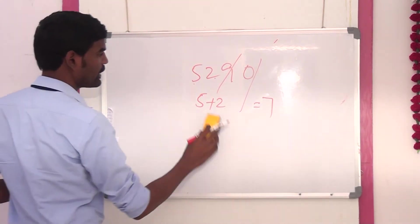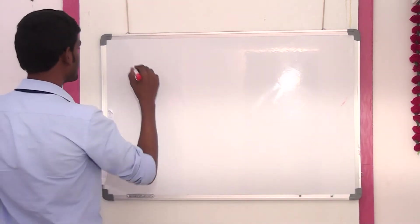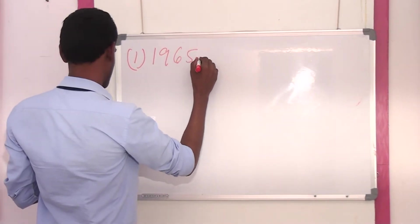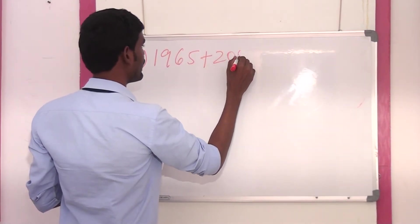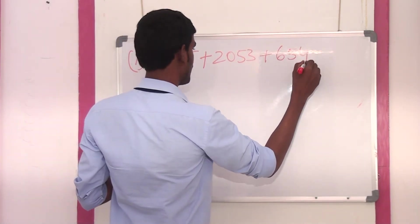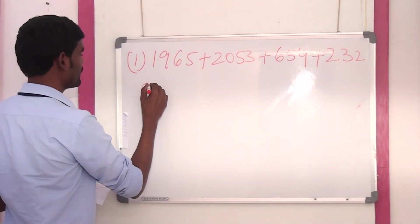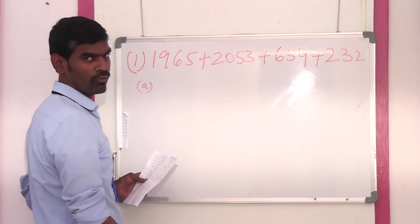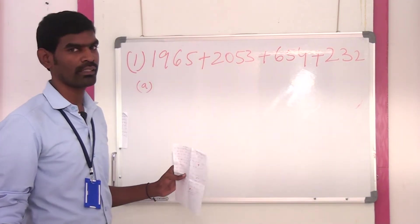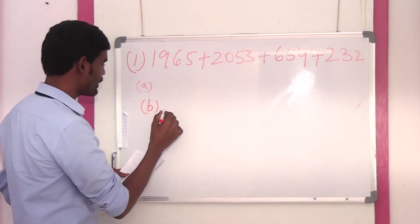Let me solve some simplification questions. Here we have to remember one thing: if there is a 'none of these' option, don't use this method. Otherwise you can easily apply this method to any problem.